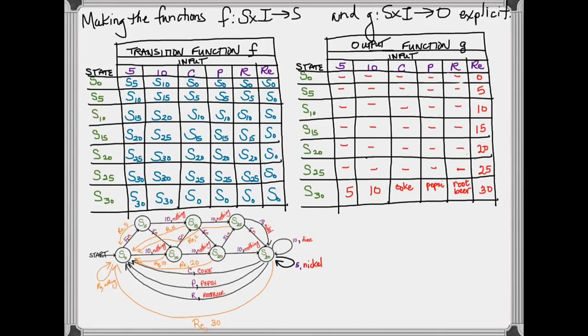I've just realized there is one state where something else should happen. The one other place where something should happen is if you insert a dime at a total of 25, you should return a nickel because you will be in excess of the target of 30 cents by 5 cents. So that is our output function for this particular problem.